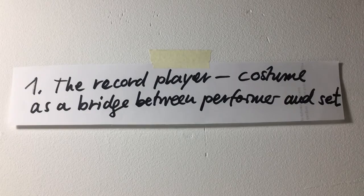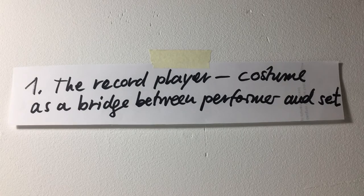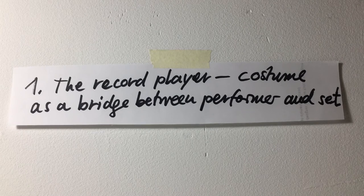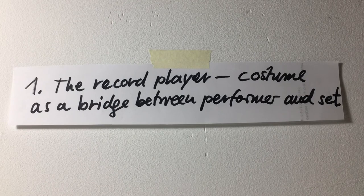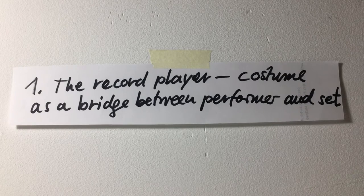Section 1: The record player — costume as a bridge between performer and set. The costume, although not part of the organic body, is to a considerable extent fused with it. Thus, it is often difficult to decide for certain human actions to what extent their performance is predetermined by the properties of the body and to what extent by the clothing. This is written by Giri Veltruski in 'Man and Object in the Theatre' in 1940.